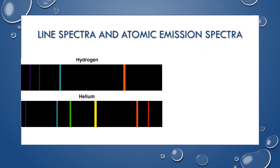In contrast to a continuous spectrum, there are line spectra, which result from atomic emission. When atoms absorb energy, their electrons get excited, and when electrons move back to lower energy levels, they release the excess energy as specific colors. You can see those specific colors of light in the line spectrum — we'll go more in depth with these in a later section.